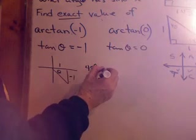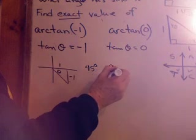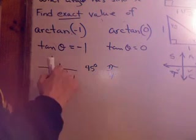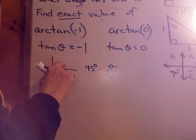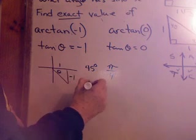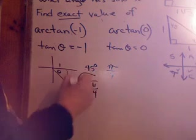It's a 45 degrees. What is it in radians? π over 4. But positive π over 4 is up here. What's down here? Negative π over 4. There you go.